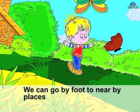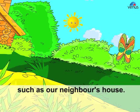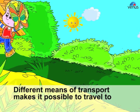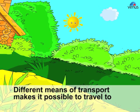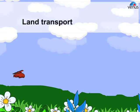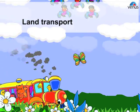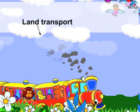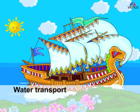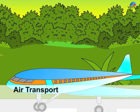Different means of transport make it possible to travel to different places. There are three main types: land transport, water transport, and air transport.